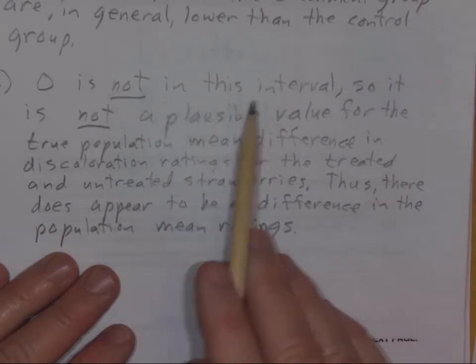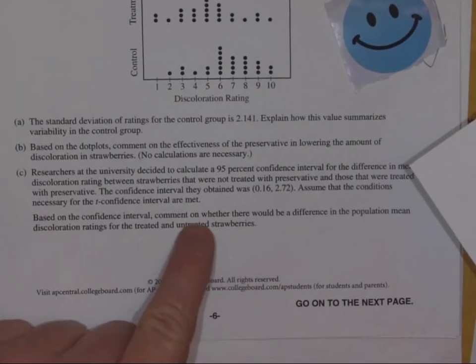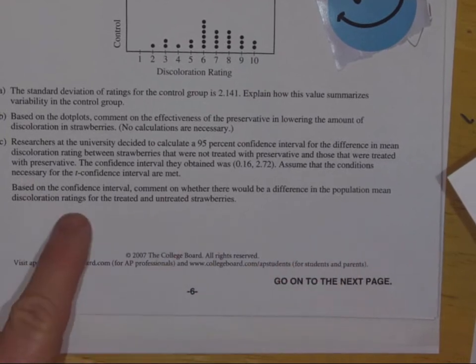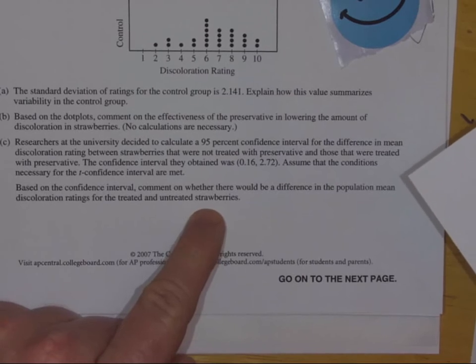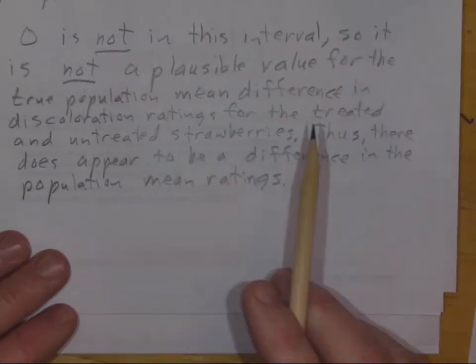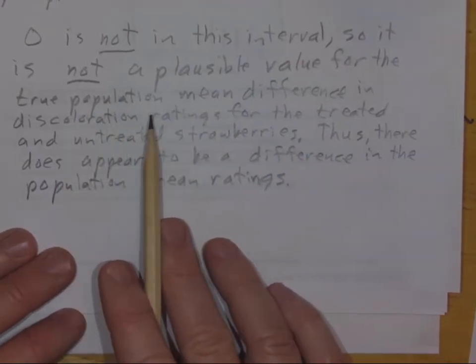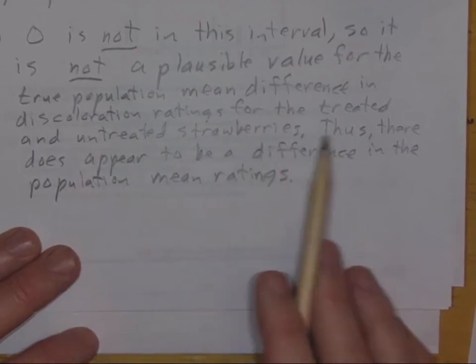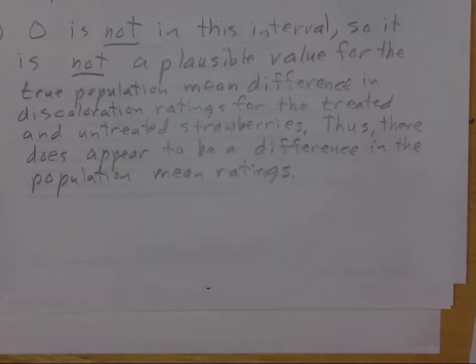And so this is the way that I worded that. Zero is not in this interval. So it is not a plausible value, and you have to say it in context, and use their wording here. It is not a plausible value for the difference in the population mean discoloration ratings for the treated and untreated strawberries. That's what they're trying to say. So zero is not a plausible value for the true population mean difference in the discoloration ratings for the treated and untreated strawberries. Thus, there does appear to be a difference in the population mean ratings. And so there you go.